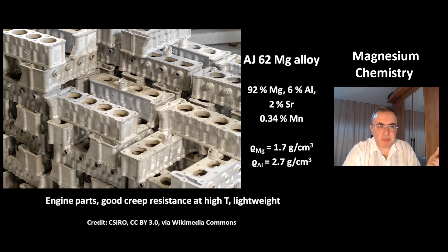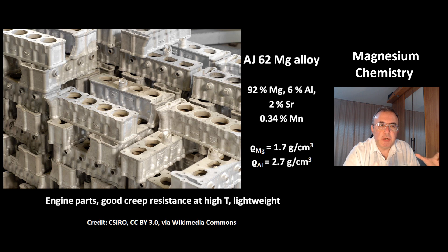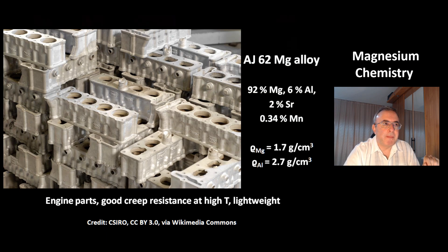However, aluminum has better resistance against oxidation. That's why it makes sense to make this alloy — the advantages of both metals are combined. AJ62 can be used for engine parts because it has good creep resistance at high temperatures and is lightweight.